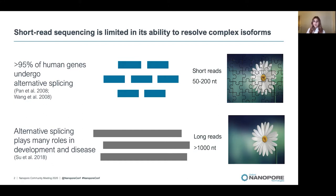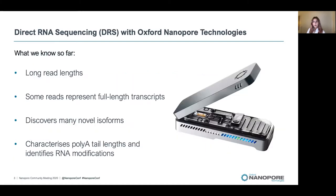These short reads, shown here in blue, can be thought of like pieces of a puzzle. Using new long read sequencing technology, no fragmentation steps are required and the reads should span entire isoforms, making the puzzle — or isoform — become clear. Direct RNA produces long read lengths, some of which represent full-length transcripts as they're present in the cell, and allows for the discovery of novel isoforms, characterization of poly-A tail lengths, and RNA modifications, all from one sequencing experiment.